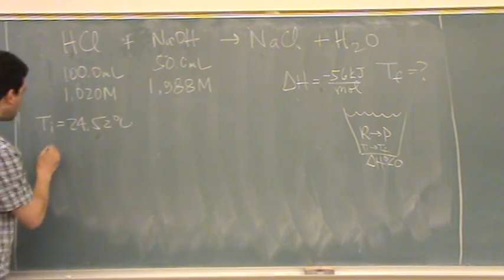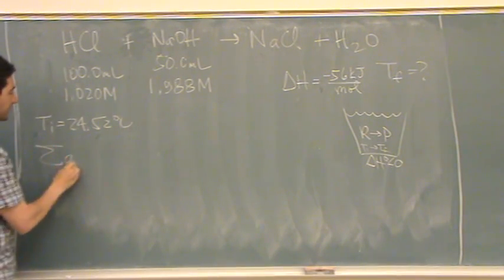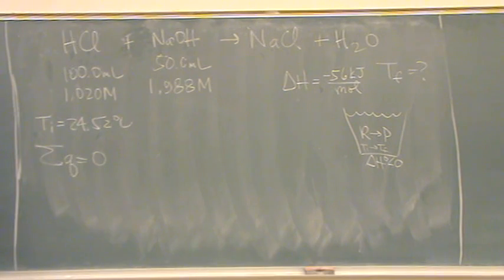Well, let's set up our little equation then. Sum of the Q's equals zero. Again, I know that it's a sum of the Q's. First of all, they said coffee cup calorimeter. It has to be this thing. There's a temperature change, that was another hint. There's a reaction, that's another hint that we're using this.